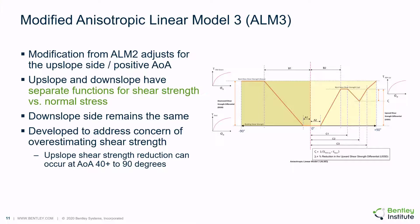The third generation, ALM3, further extends ALM2 on the upslope side — the positive angle of anisotropy. The downward shear strength guide for the negative angle of anisotropy (0 to -90 degrees) remains unchanged from ALM2. In this model, the upslope and downslope have separate functions for shear strength versus normal stress; the upslope curve is modified to address the concern of overestimating shear strength. Multiple A, B, and C parameters define the non-symmetrical shape of the shear strength transition, and the rate and shape of the transition depends on the bedding to rock mass strength ratio as well as the normal stress. Both rock mass and bedding shear strengths are now modeled non-linearly in terms of normal stress.